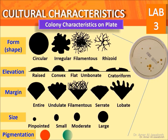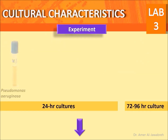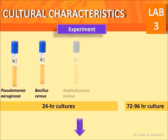Colony size is described as pinpointed, small, moderate, or large. Pigmentation may be red, green, yellow, white, or gray. In nutrient broth, the appearance of growth is described as uniform, flocculent, pellicle, or sediment. Broth cultures are prepared for Pseudomonas aeruginosa, Bacillus cereus, Staphylococcus aureus, Escherichia coli, and Mycobacterium.